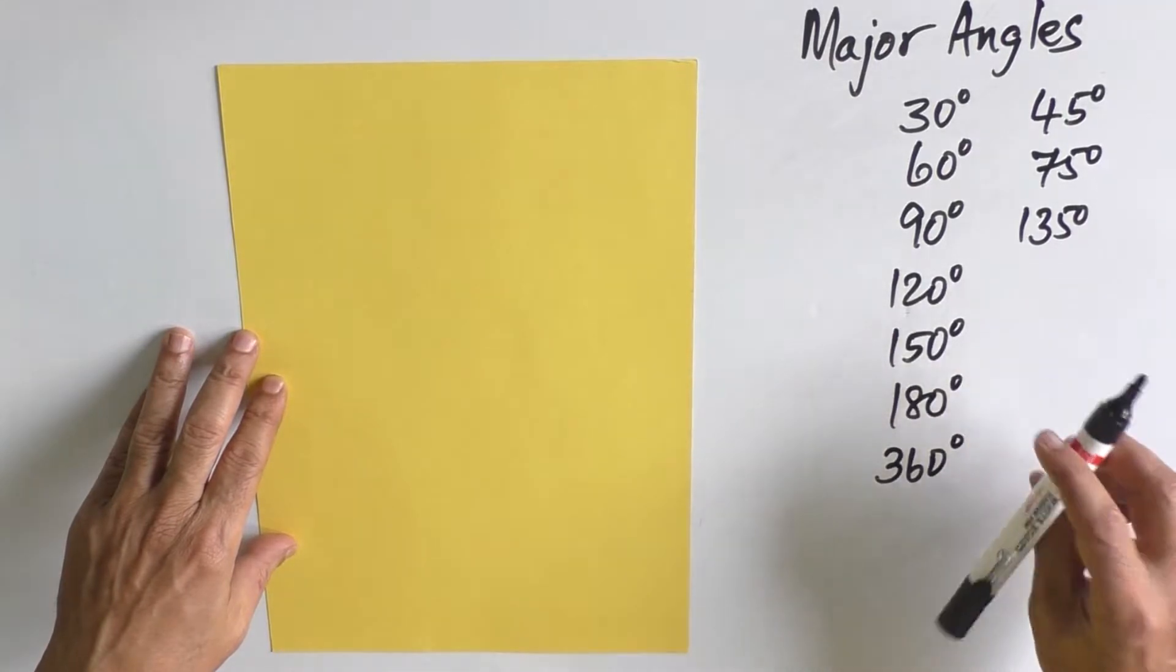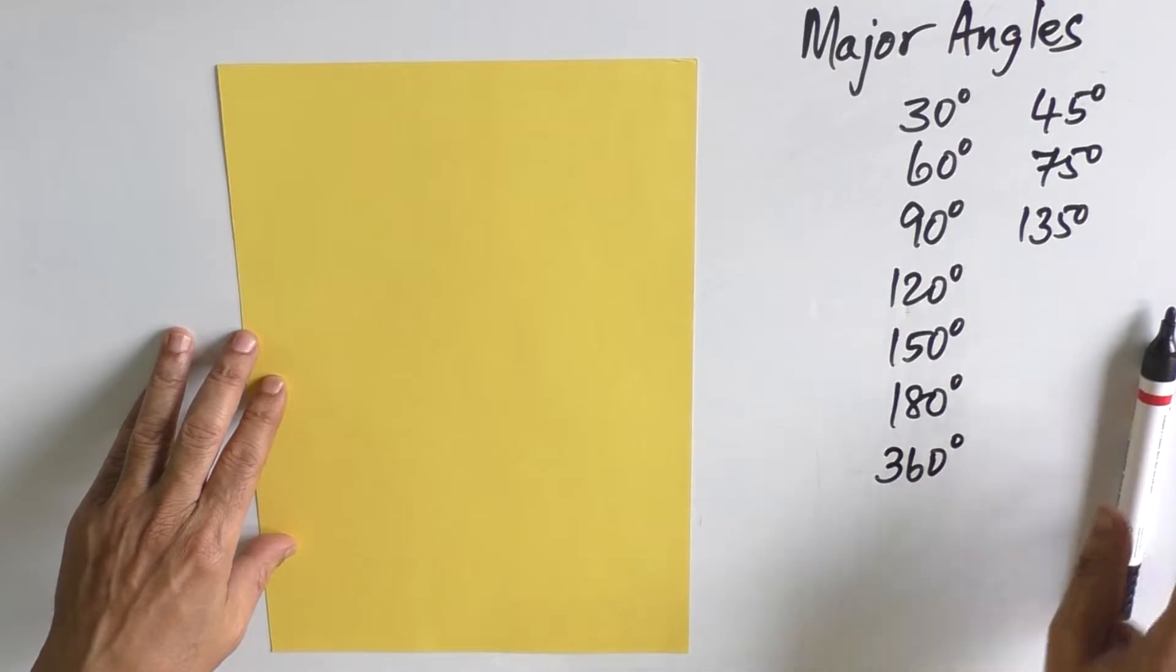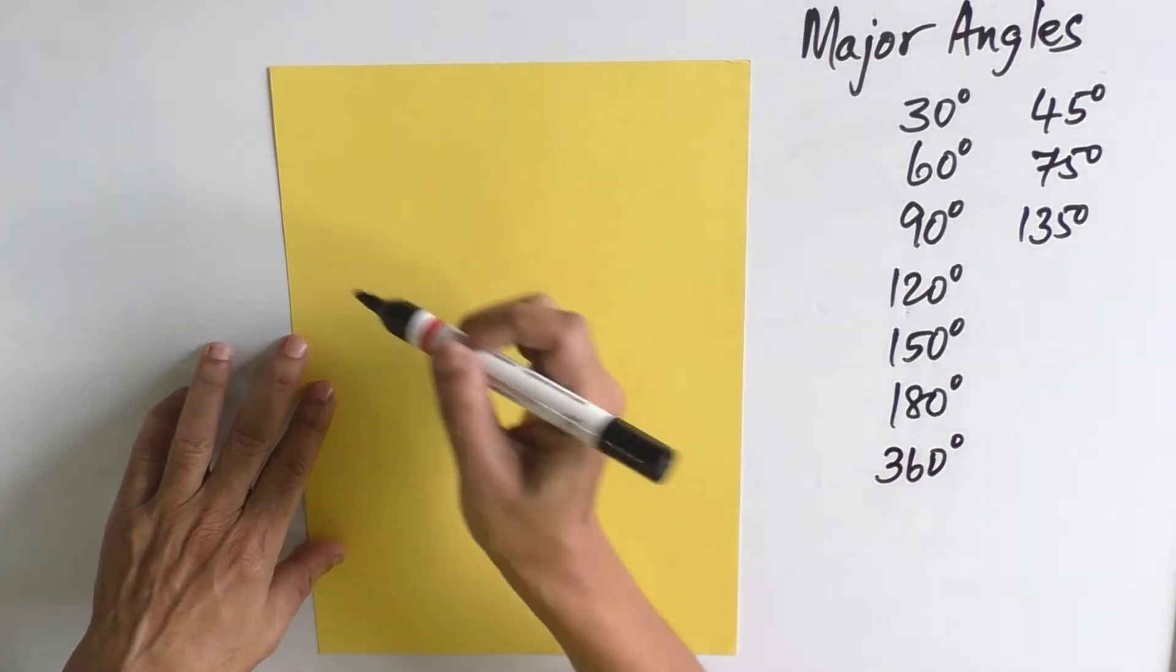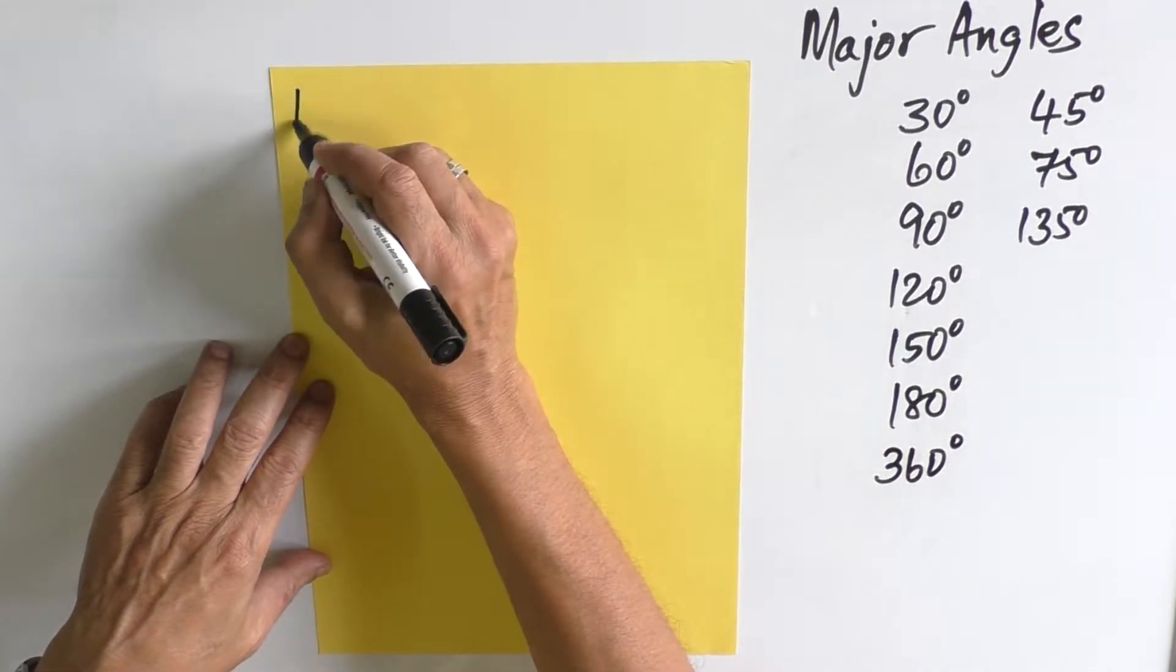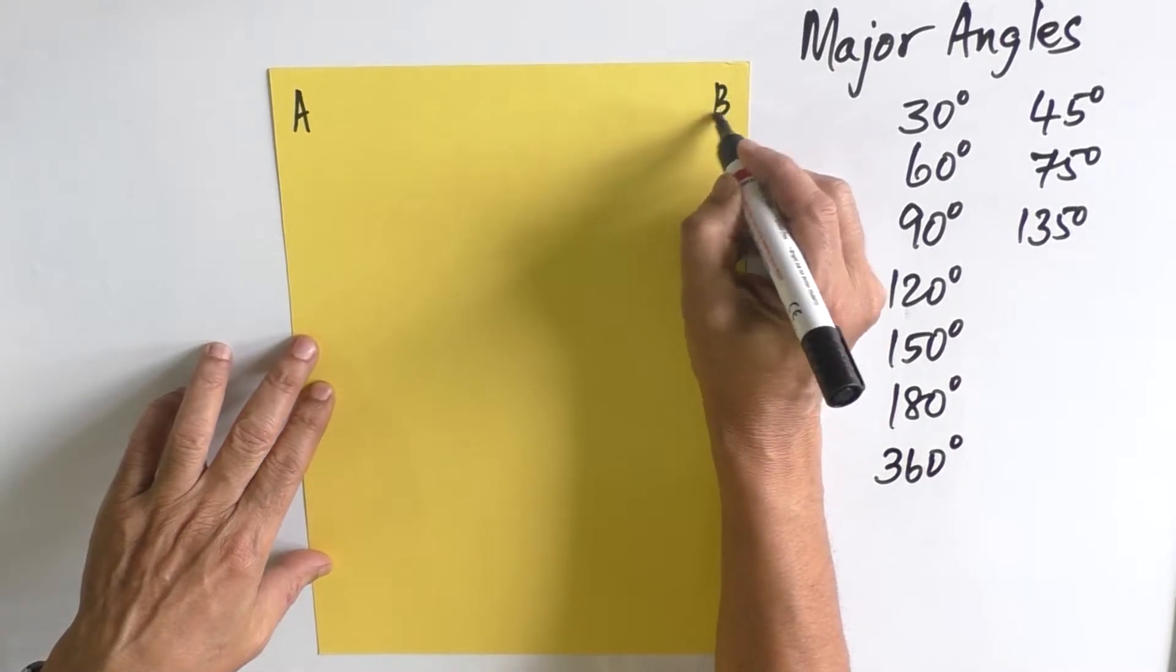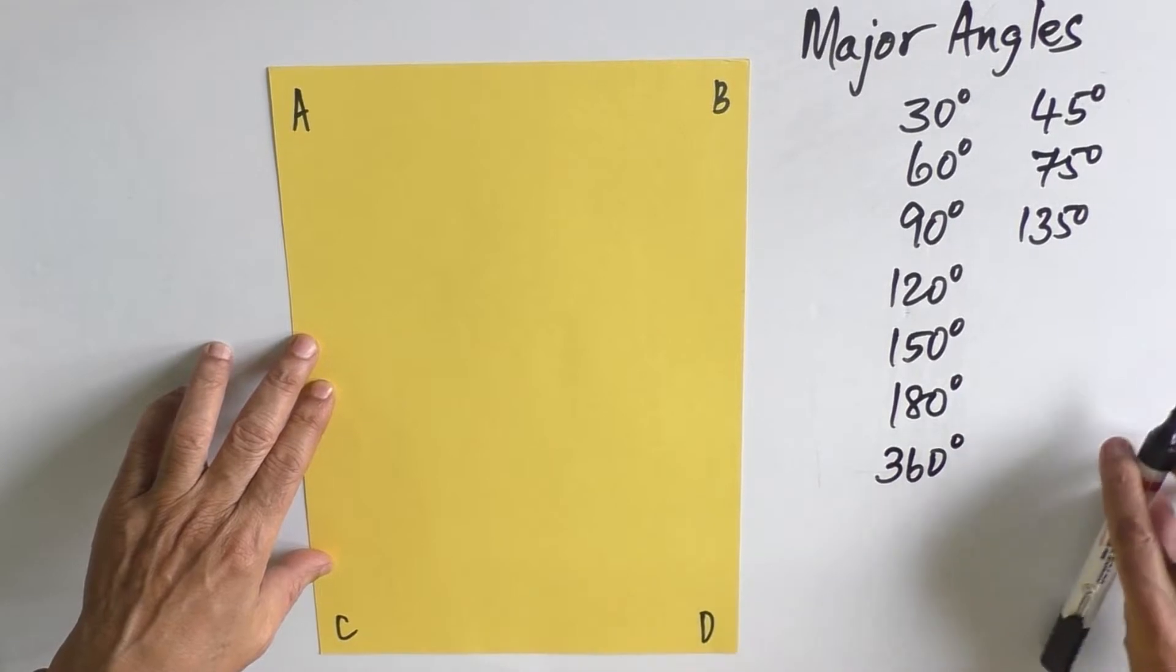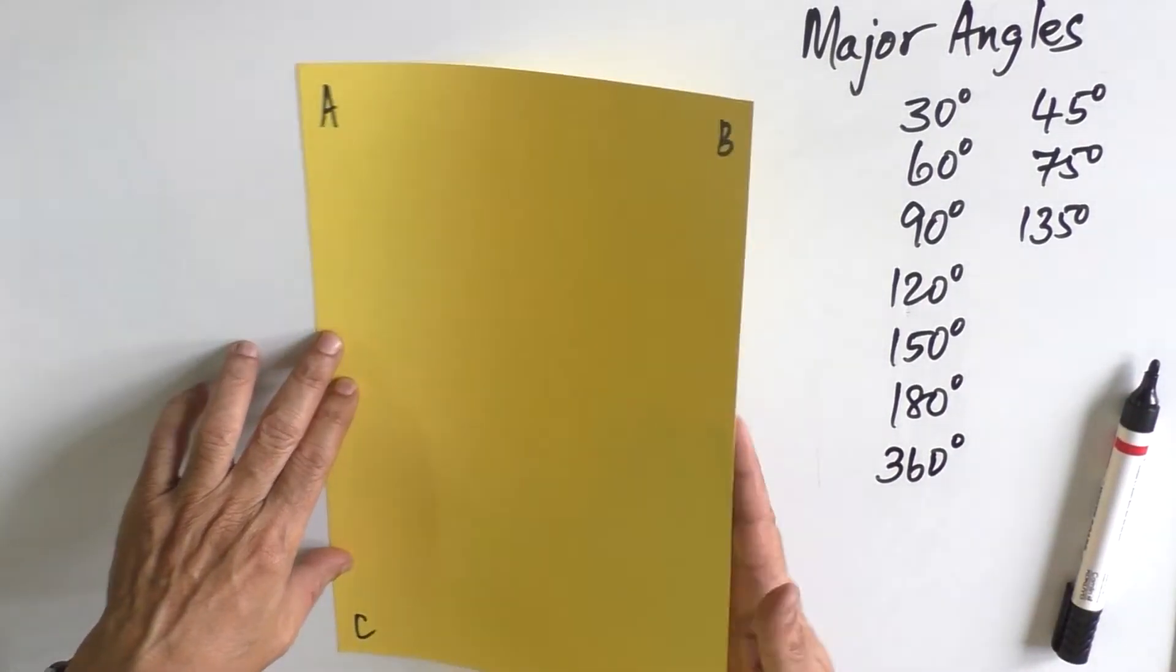Let us take a rectangular paper and mark it as A, B, C, and D. Now, first let us fold the paper vertically